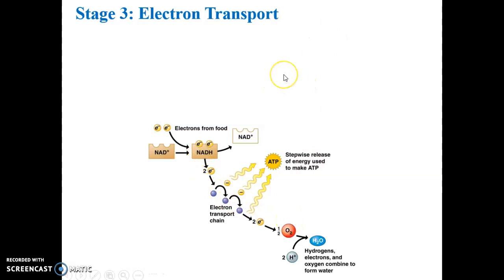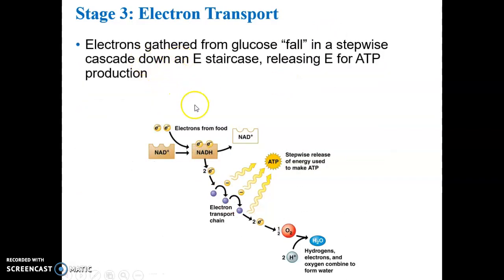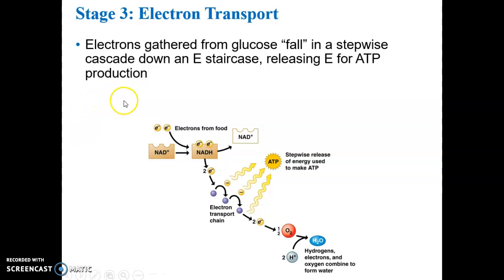The electron transport chain is in the inner membrane of the mitochondria. The electrons gathered from glucose energetically fall down a stepwise cascade through a series of electron transfer proteins in the mitochondrion membrane — those bluish or purplish proteins you saw in the video where the electrons migrate through. The energy provided by those electrons is ultimately used to produce ATP.